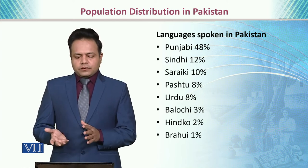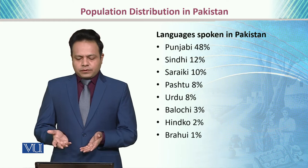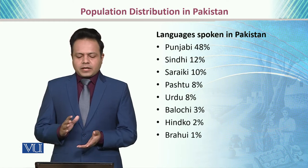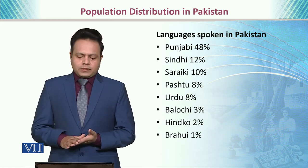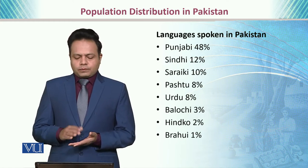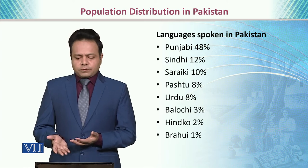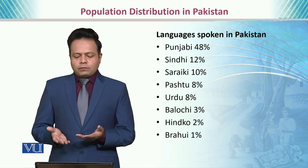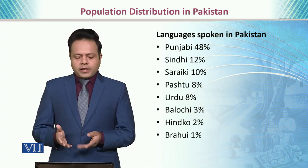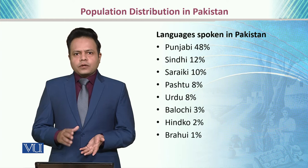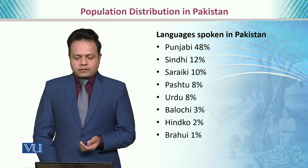Regarding language distribution, 48% of Pakistanis speak Punjabi as their mother tongue, Sindhi 12%, Seraiki 10%, Pashto 8%, Urdu 8%, Balochi 3%, and Hindko and Brahvi 2% and 1% respectively.